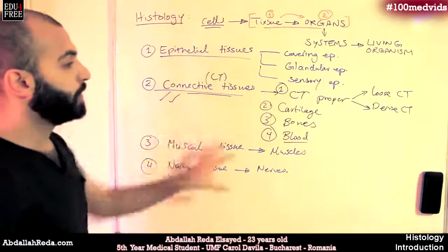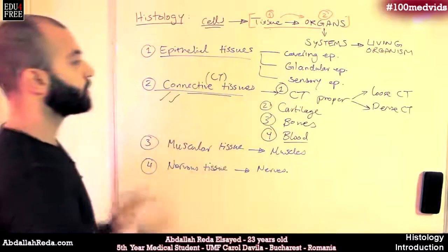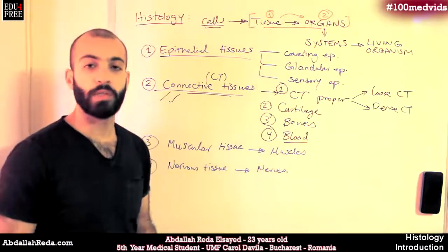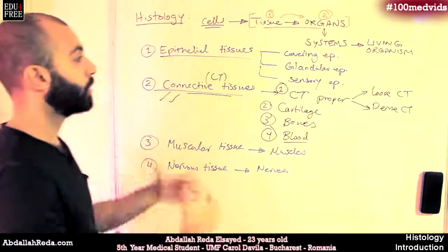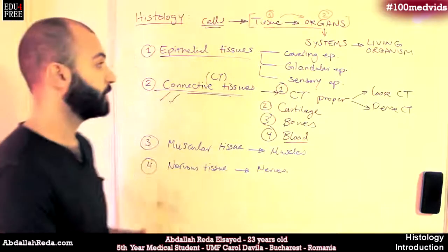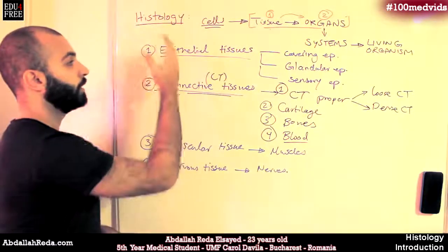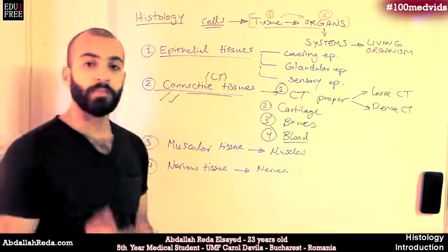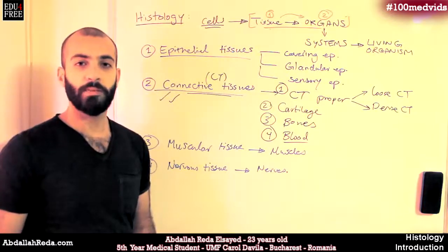So this is the main classification — a summary of the types of tissues we have inside the human body. Now we are going to start talking about these one by one. In the next video, we will start talking about the epithelial tissues. Until then, I thank you for watching and see you.